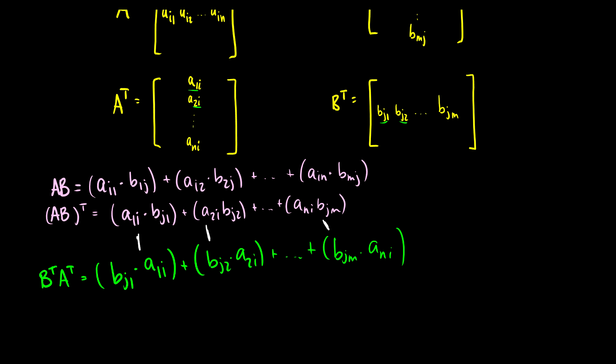So we've concluded that this transpose of A times B is the same thing as B transpose times A transpose. So these two are equal.